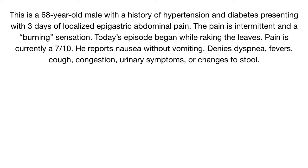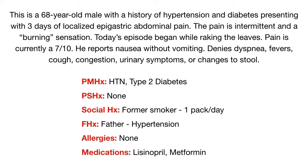You also obtain more information about his general history. He has a past medical history of hypertension and type 2 diabetes, and no surgical history. He was a former smoker who quit five years ago and used to smoke one pack of cigarettes per day. He has a family history of hypertension in his father, no allergies, and he takes lisinopril and metformin.